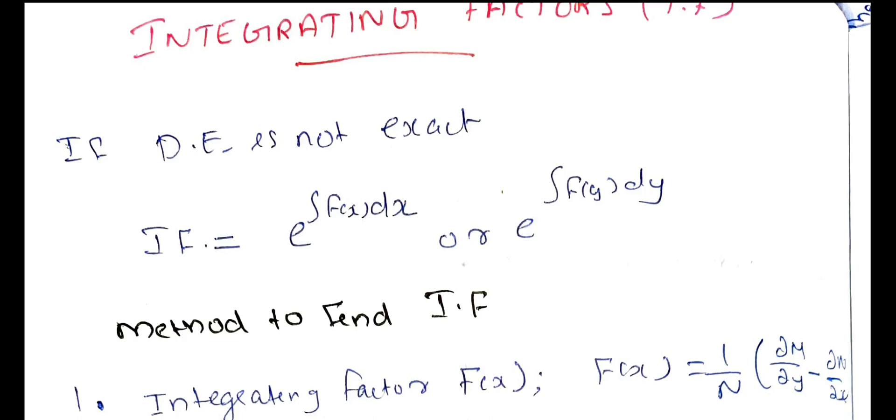Now, if dM/dy is not equal to dN/dx — that means the equation is not exact. When it is not exact, we use the Integrating Factor.